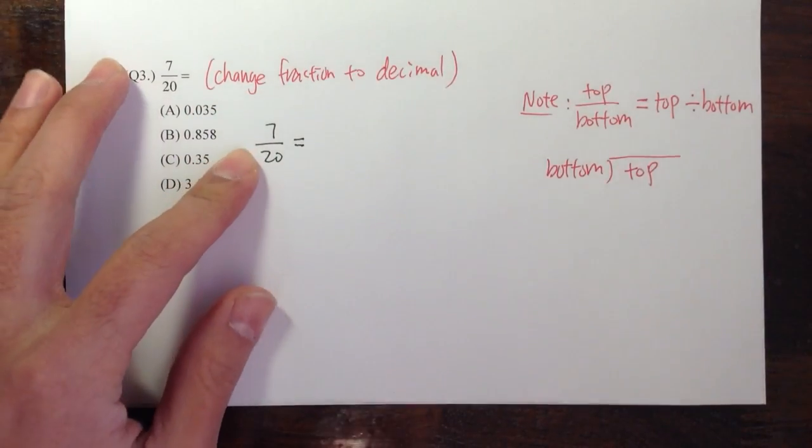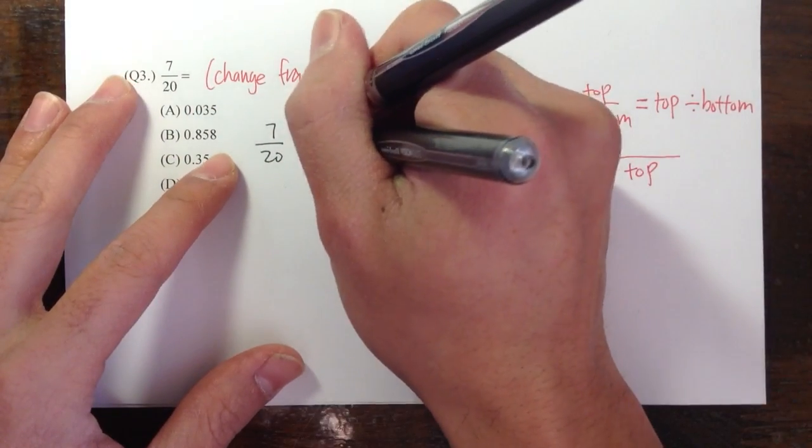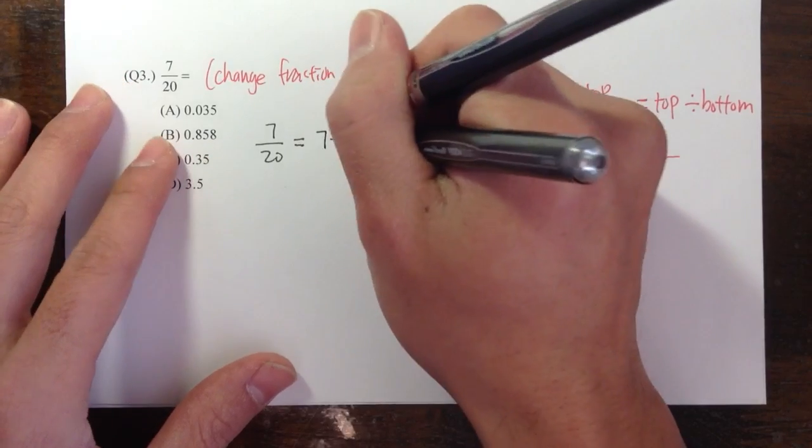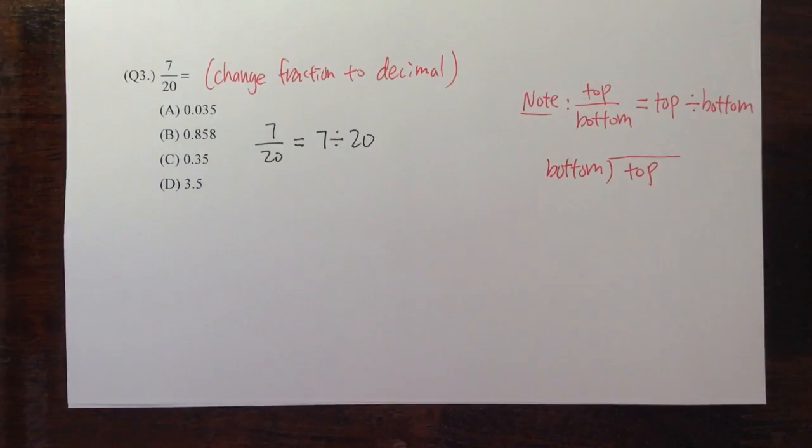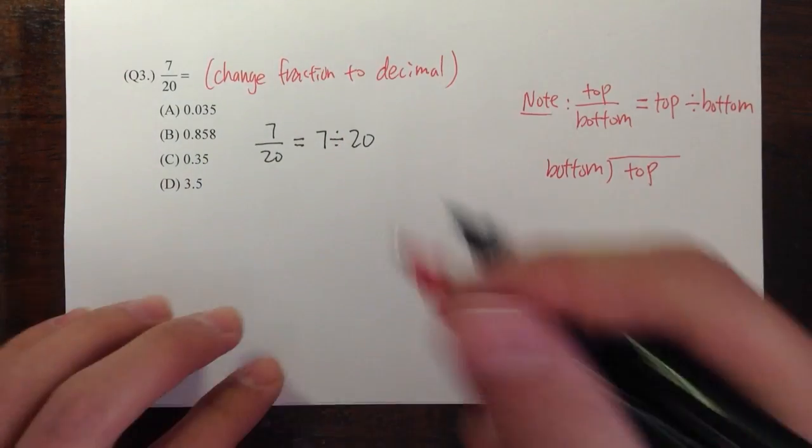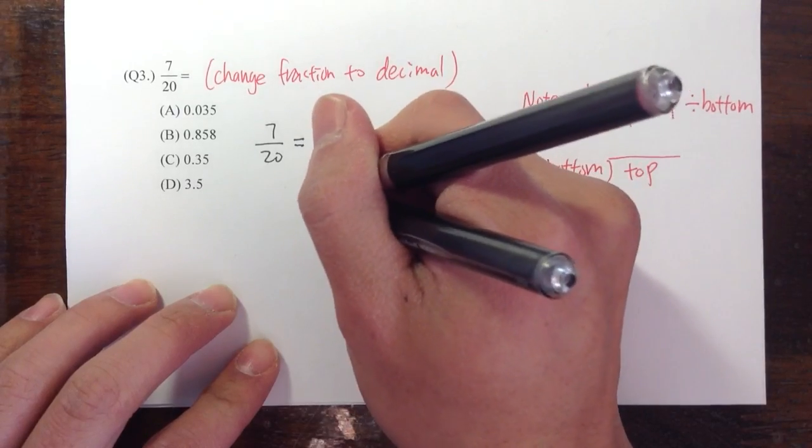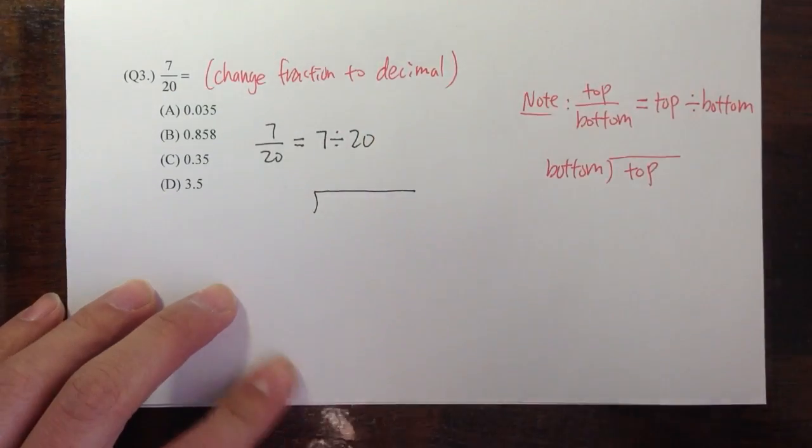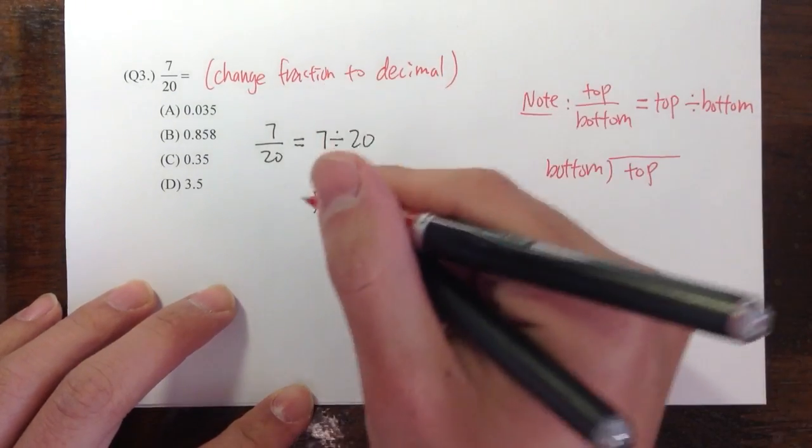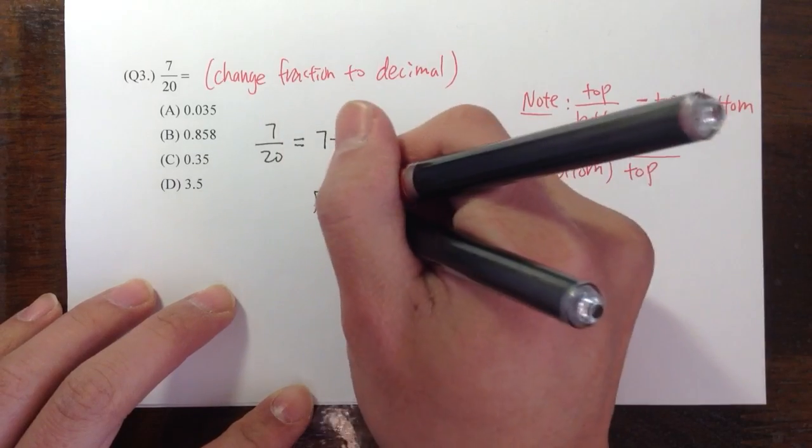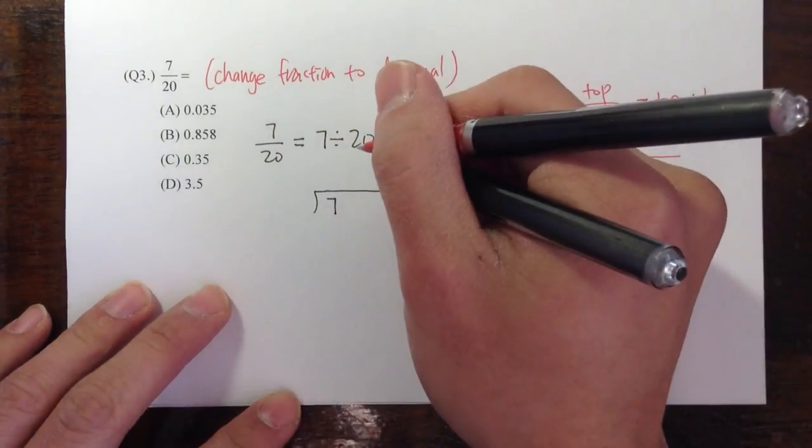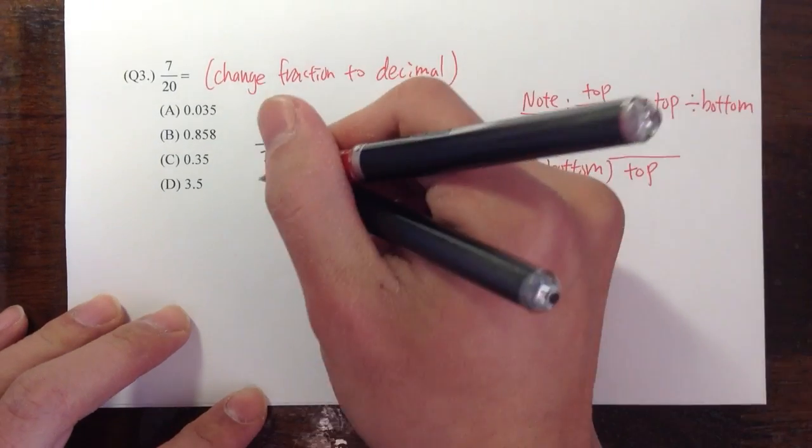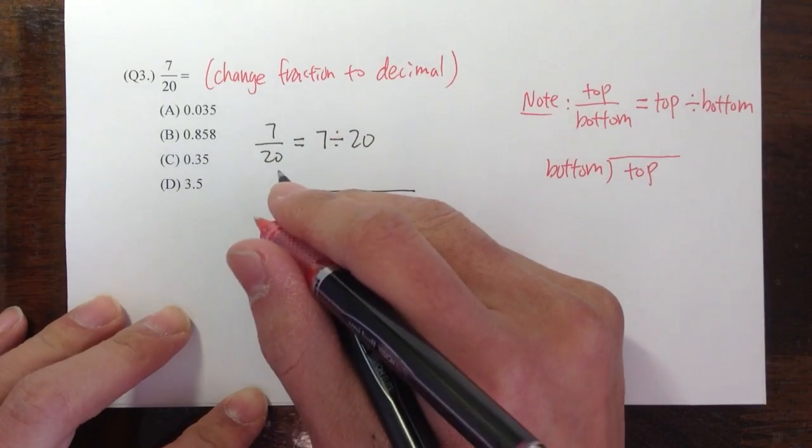We have 7 over 20. So to do this, we can just write this as 7 divided by 20, and then we are going to do the long division. 7 is the first number, the number on the top, so put it inside. And then 20 is the second number, the number on the bottom, put it outside.